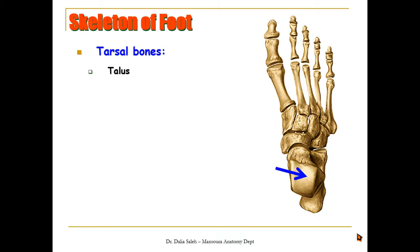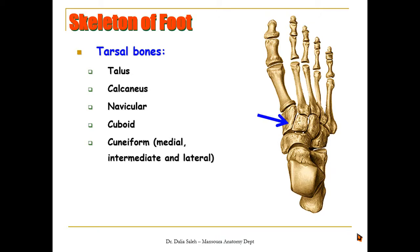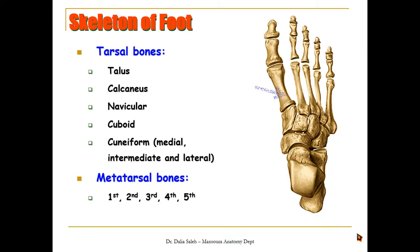The tarsal bones are seven in number. The upper one is called the talus, which shares in the formation of the ankle joint. The lower one which lies against the ground is the calcaneus, or the heel bone. The curved one is the navicular, this one is the cuboid, and we have three cuneiforms: the medial, the intermediate, and the lateral cuneiform. We have five metatarsal bones, simply numbered from the biggest to the smallest: the first, second, third, fourth, and fifth metatarsal bone.